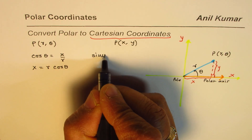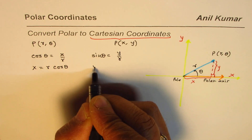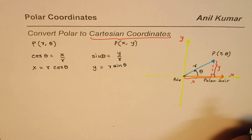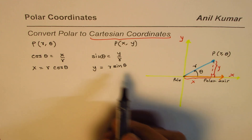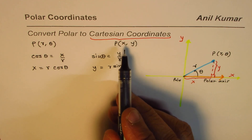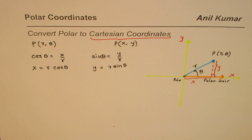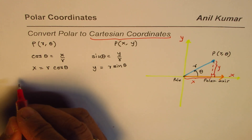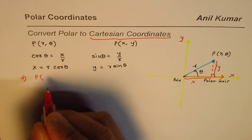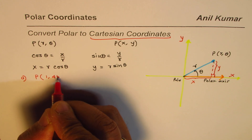That gives you the points X and Y from the polar coordinates. Now let's take a few examples. Example A: the polar coordinate is (1, 45°), and we want to find the equivalent Cartesian point X and Y.